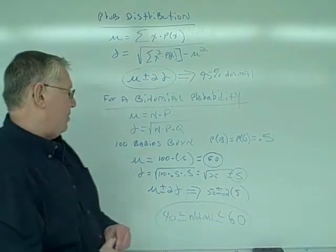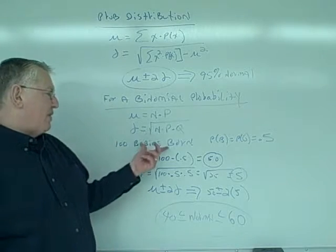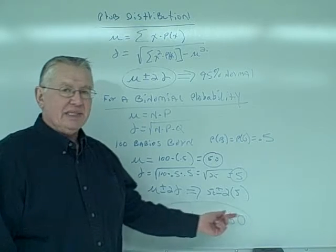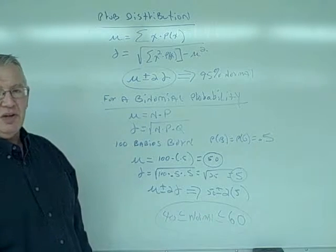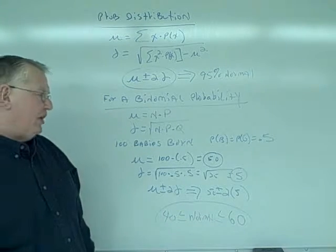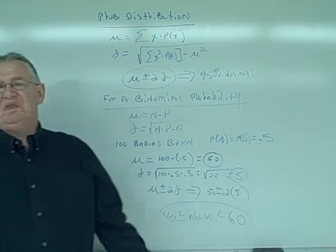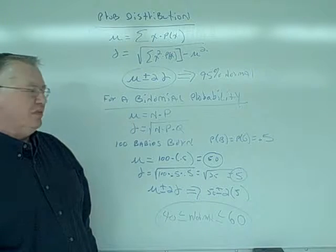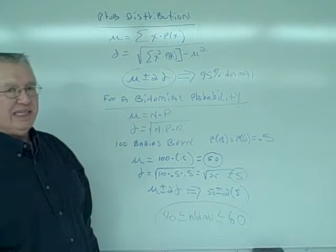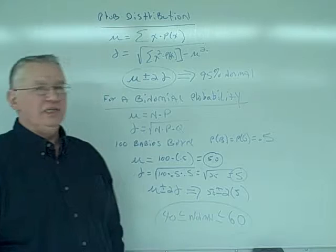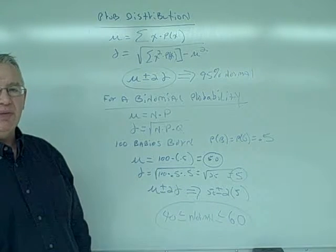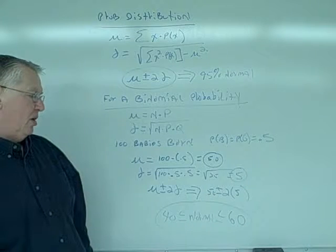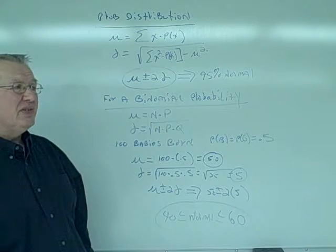So using these parameters, if I have 100 babies born, anywhere between 40 and 60 boys would be considered normal. If we did a microsort gender situation and we got 79 boys, that would be considered abnormal, and that microsort situation would probably be considered significant.